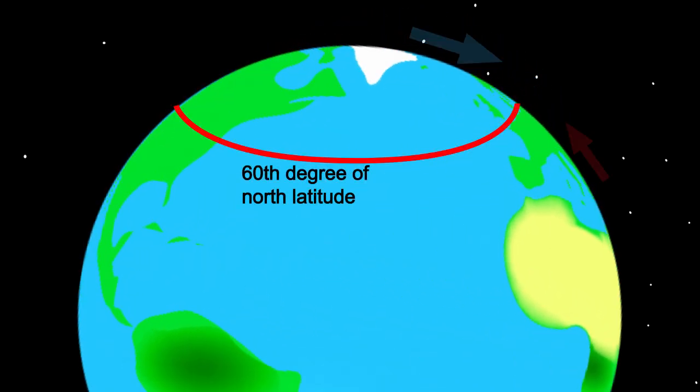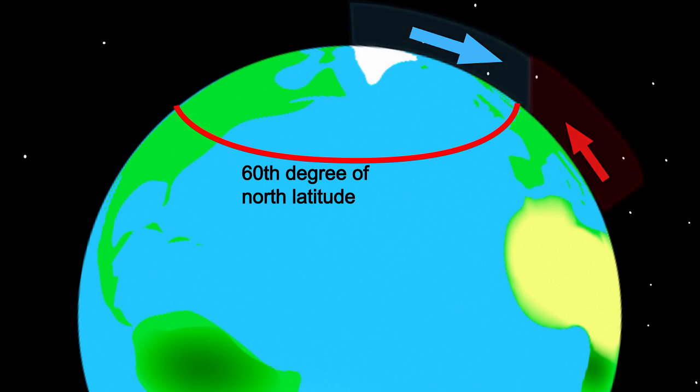Around the 60th latitude, cold air from the polar regions collides with the hot air from the 30th latitude. The warm air contains more water vapor and is lighter, which causes it to rise. Then the water vapor condenses and it rains.